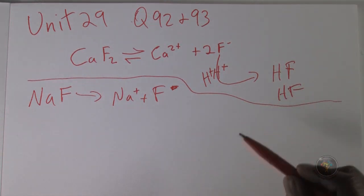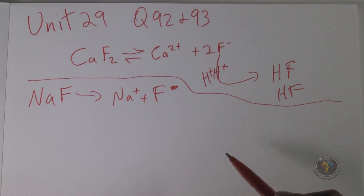Looking at the KSP values, you need to understand that the higher the KSP value, the more soluble it is. If you have a concentration above your KSP, that's your saturation limit, then you get precipitation.